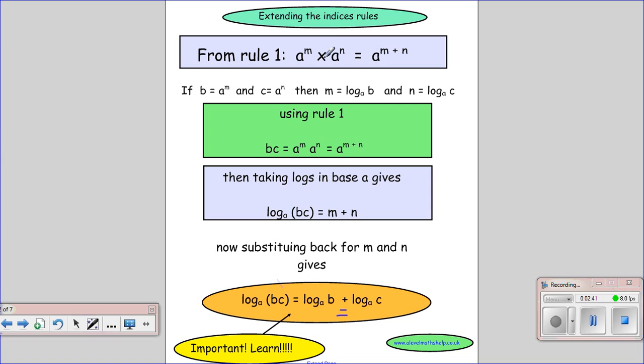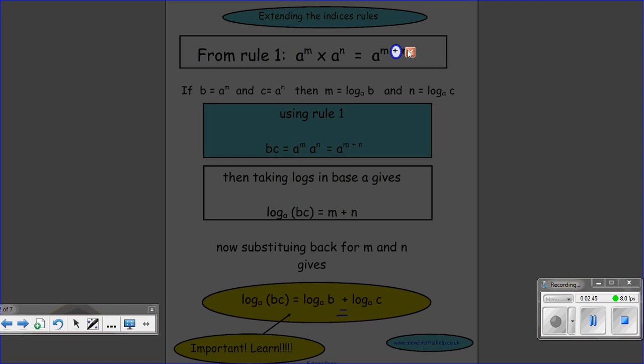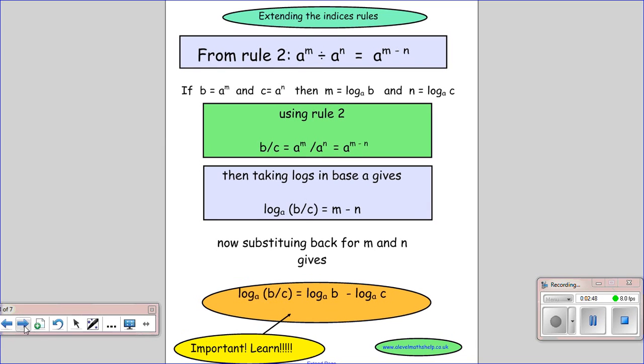And actually, you can see that's similar here. When we're multiplying here, we add up there. So it's not so difficult to remember. OK, so rule two is to do with dividing. Again, we're extending the indice rule.